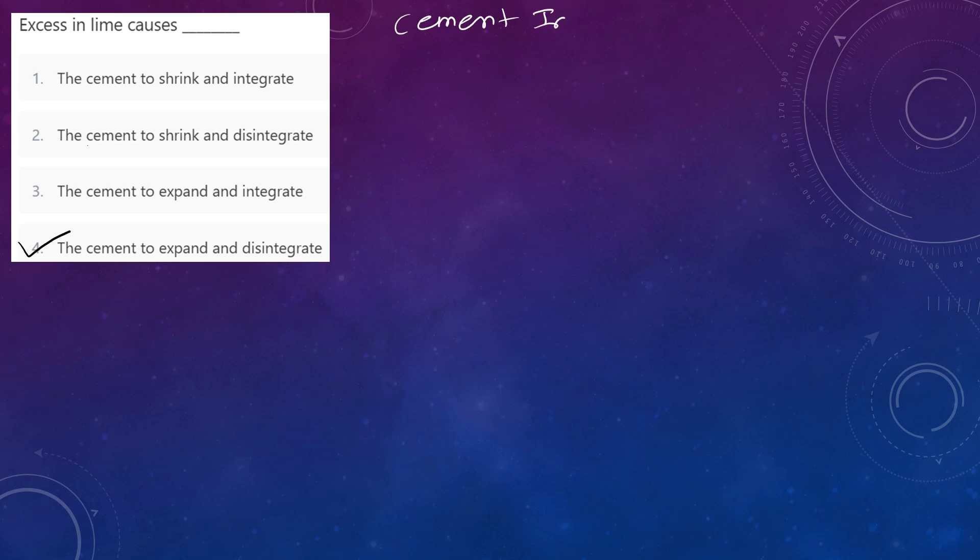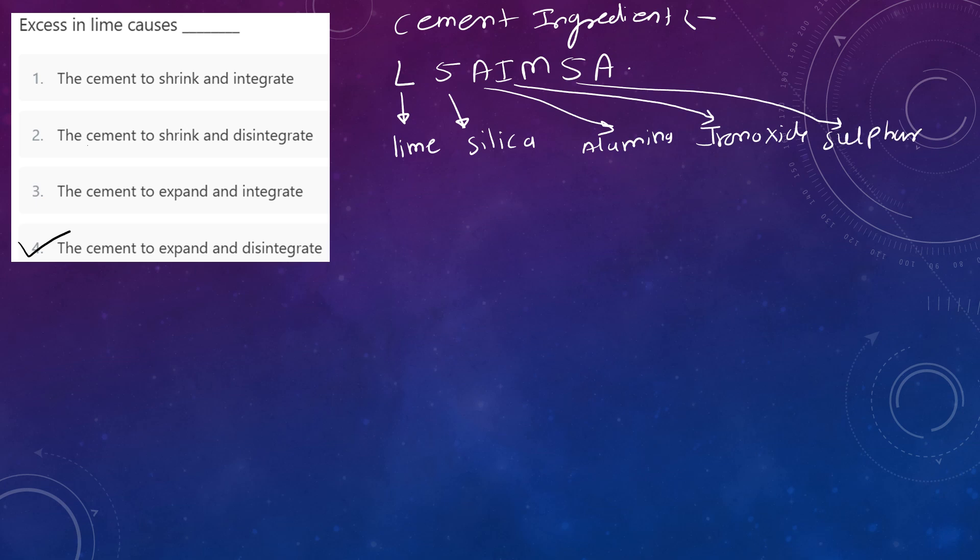Cement content or cement ingredients: there is one trick to remember these ingredients easily. The trick is Lace Aim Success Achieved. This is the short form for cement ingredients. L is lime, S is silica, A is alumina, I is iron oxide, S is sulfur trioxide, and last A is alkali.